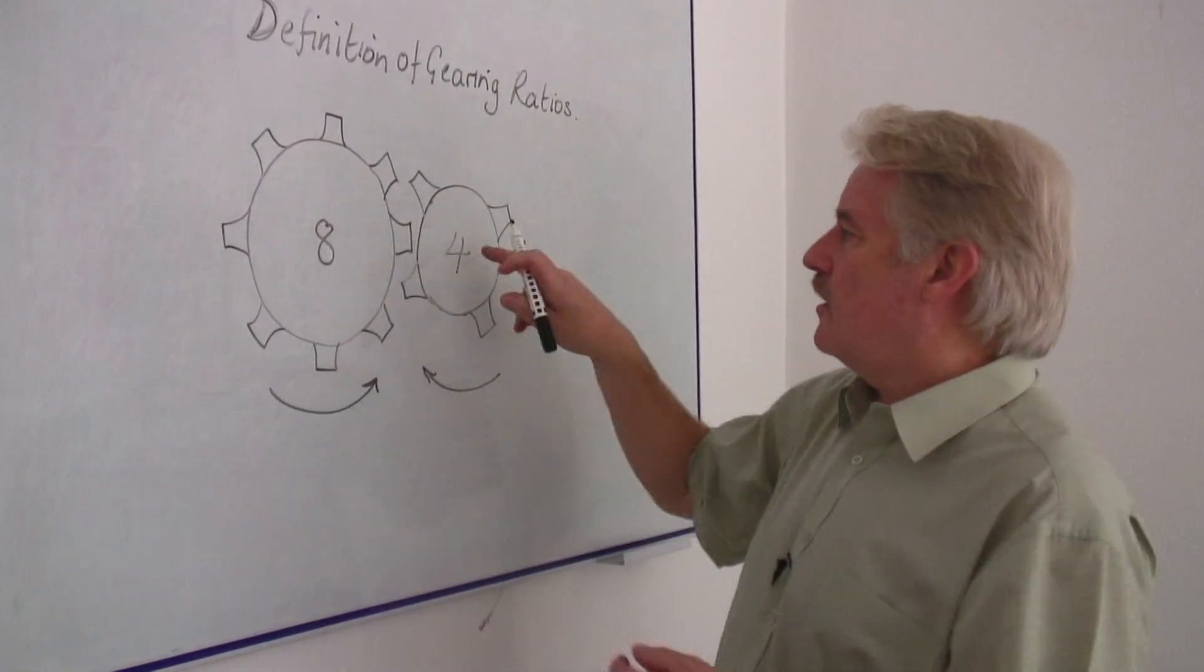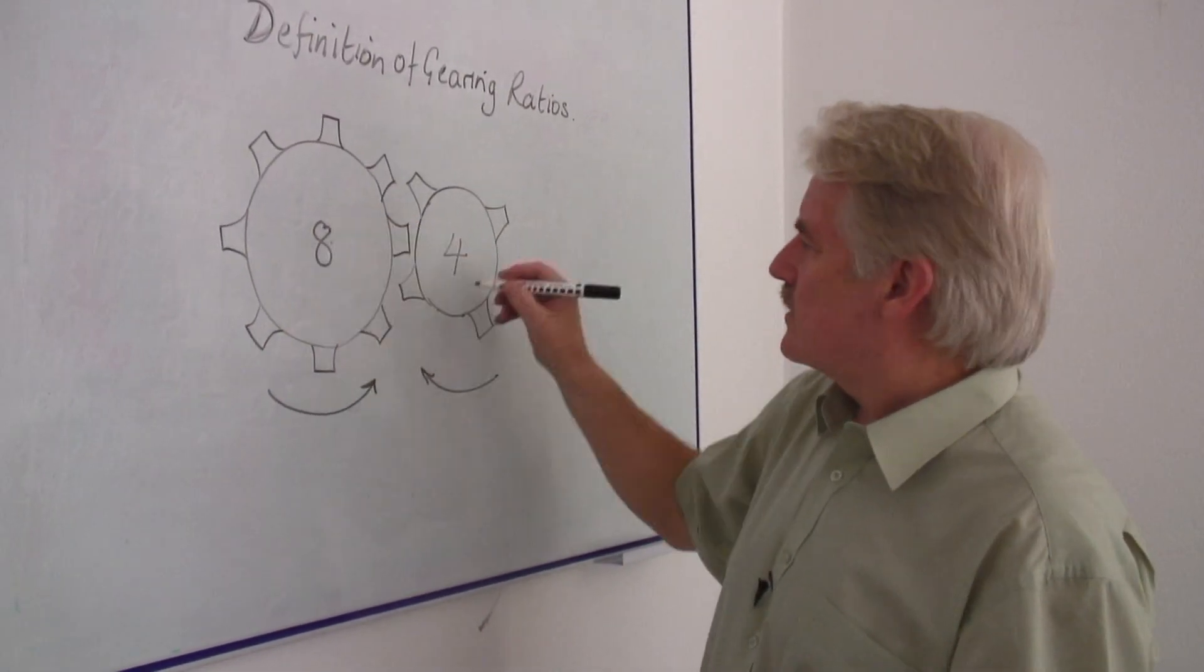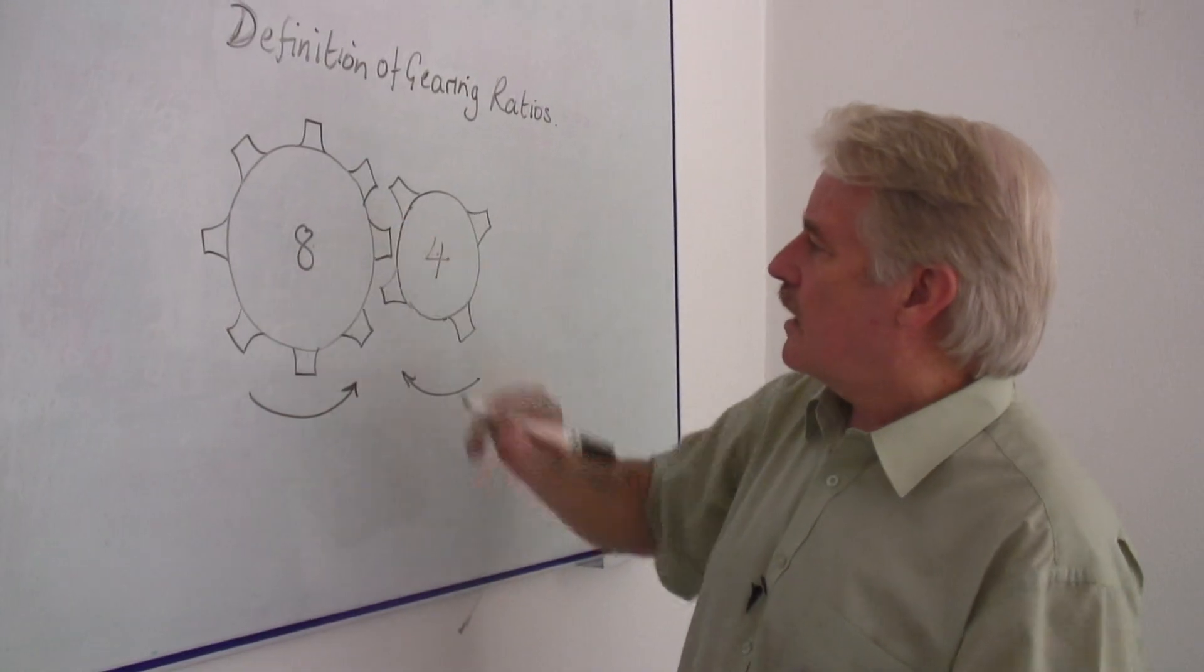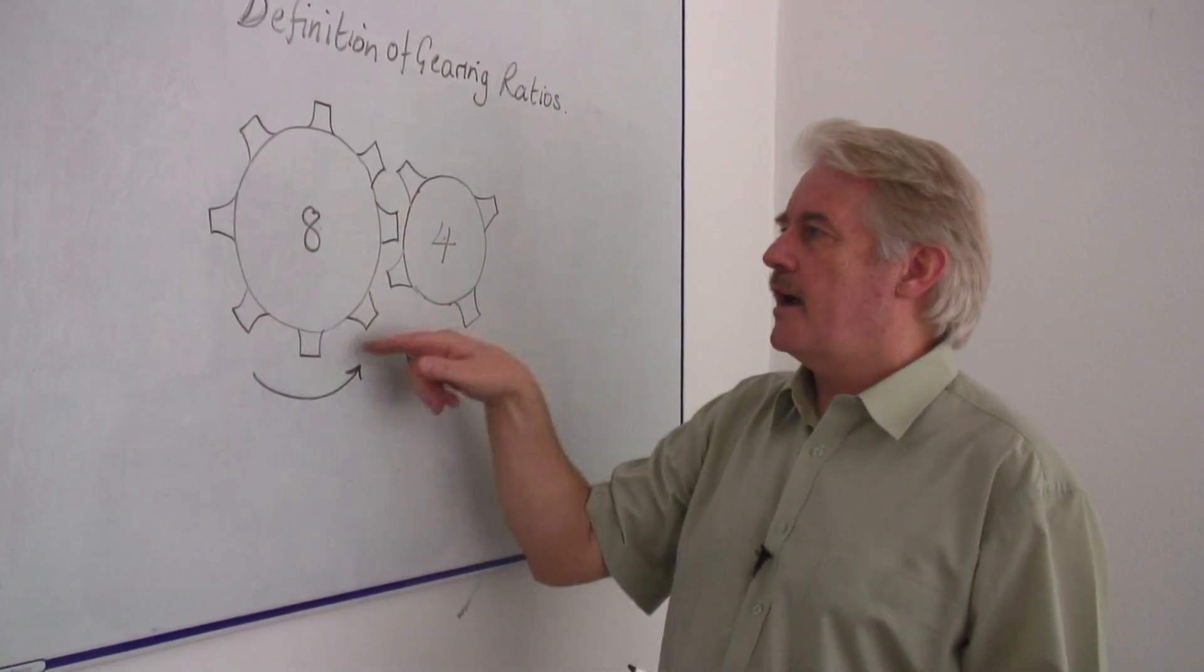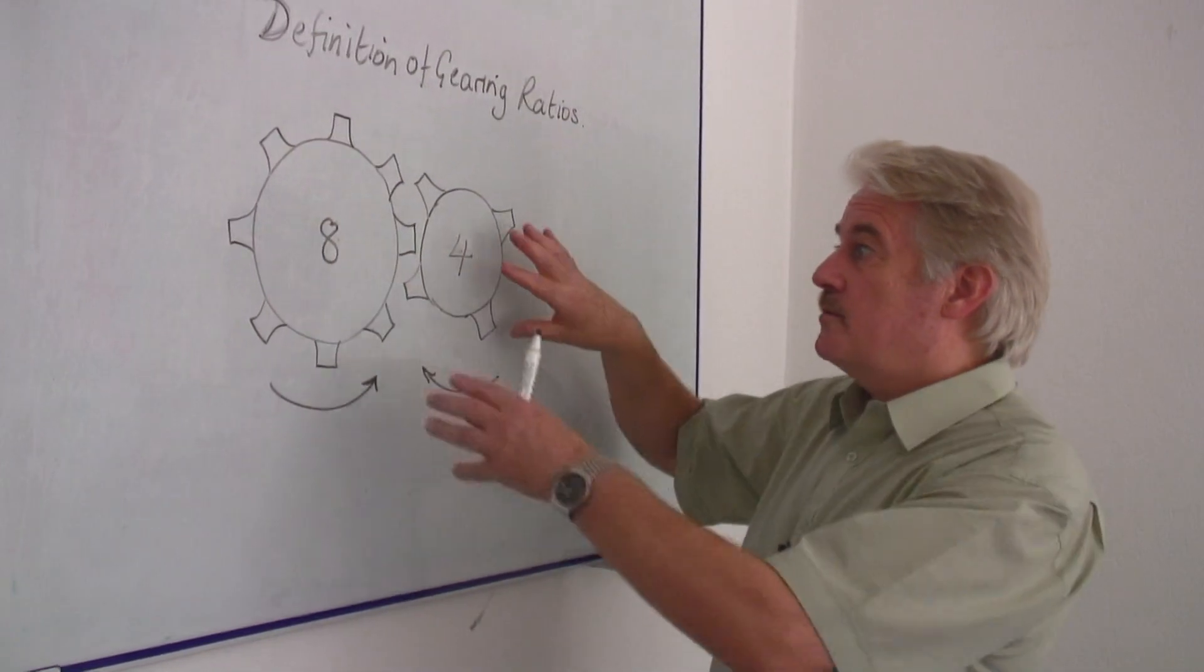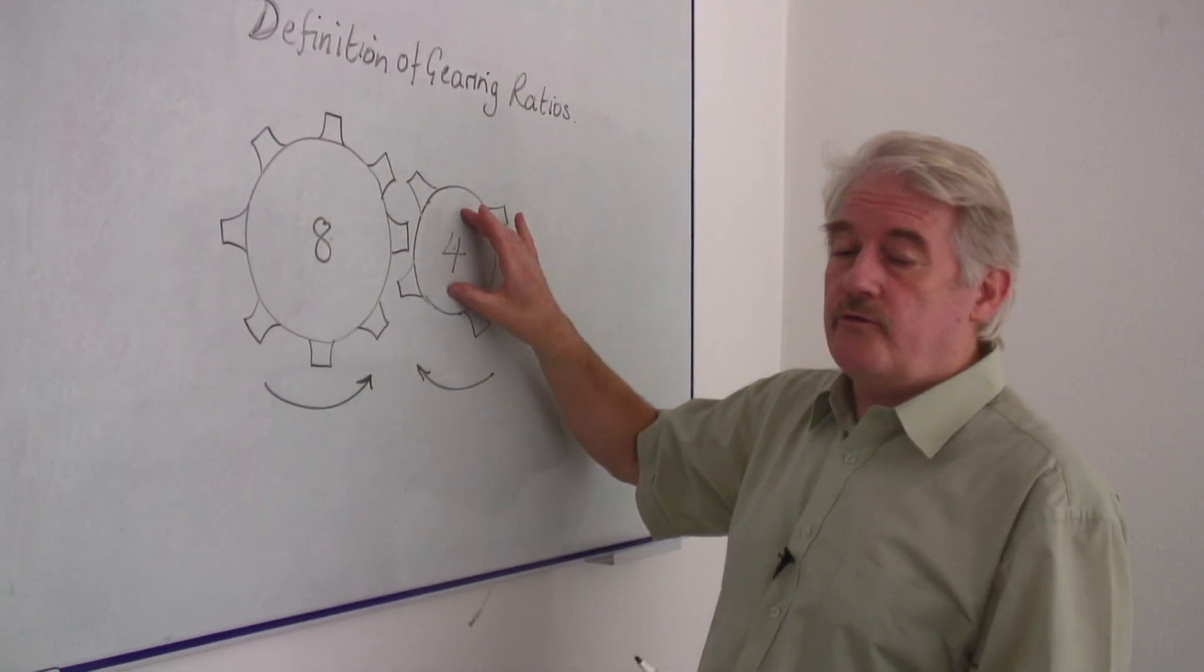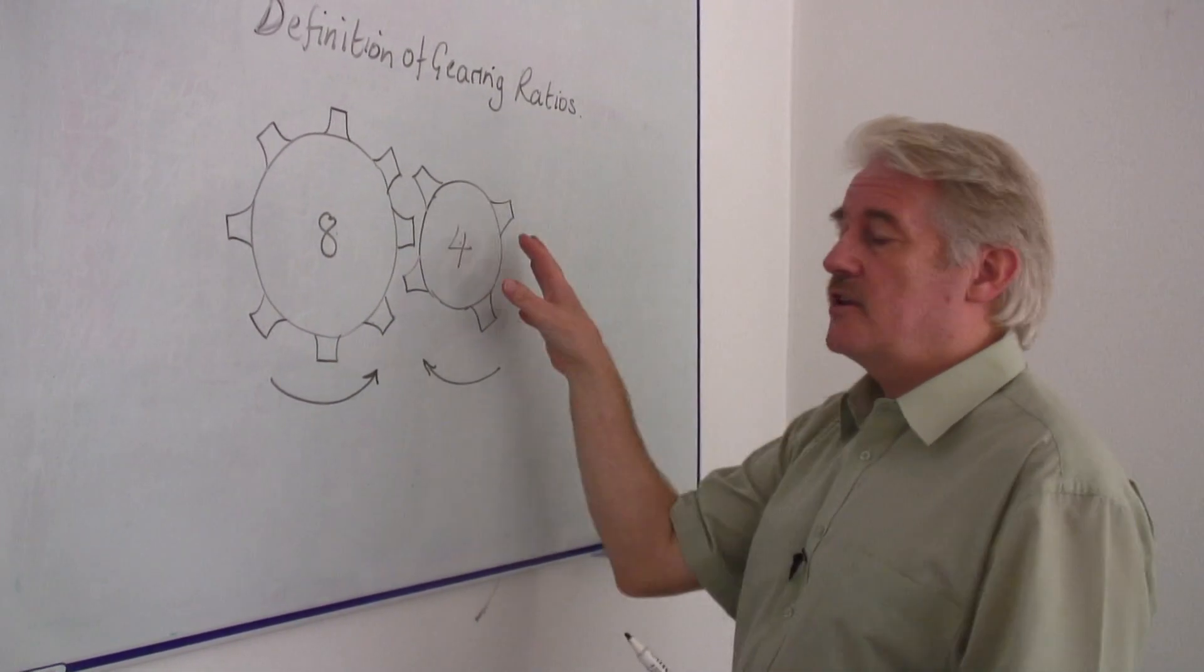Each is on an axle in the centre, allowing it to rotate. We're rotating this one anti-clockwise. Automatically, the one with four teeth is going to rotate clockwise.